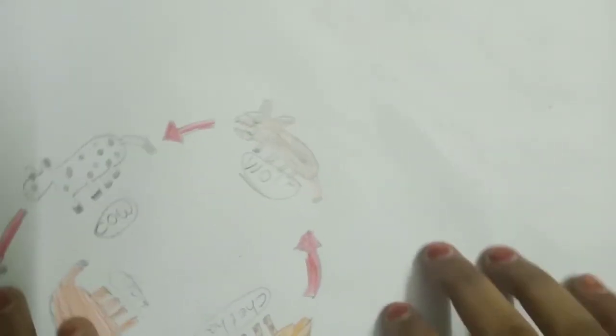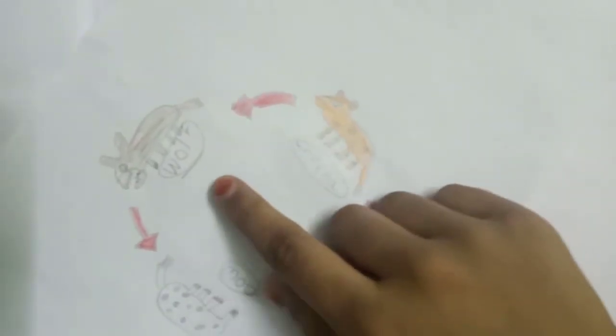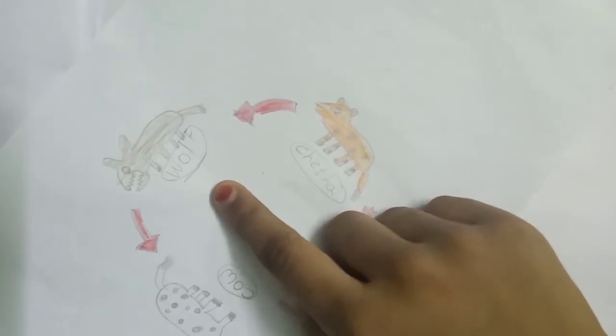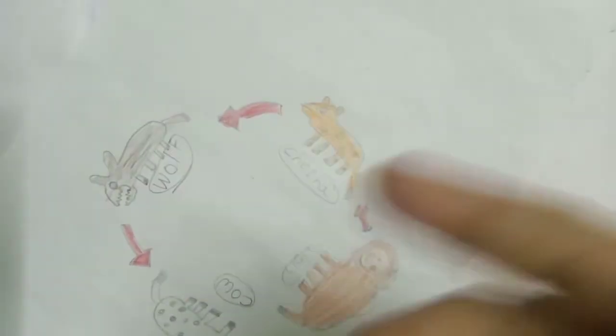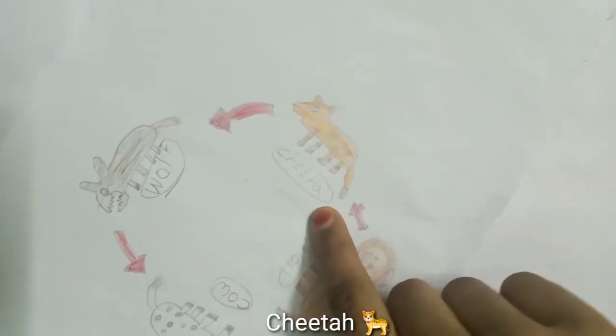So then let's move on to the next one. Here we have a cheetah. The cheetah's food is the wolf, and we can also say the wolf is eaten by a cheetah.